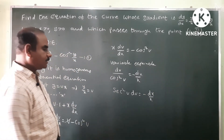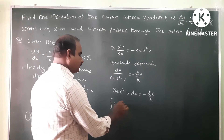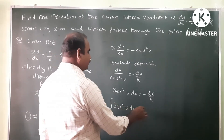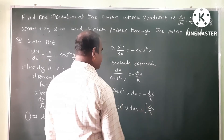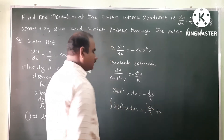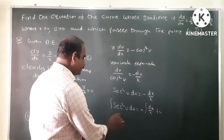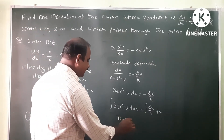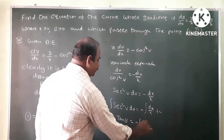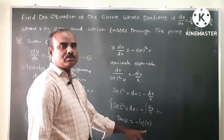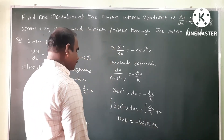Now we integrate both sides. The integral of sec squared v dv equals minus the integral of dx by x plus integration constant c. So tan v equals minus log mod x plus c.